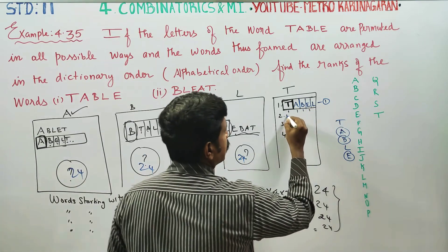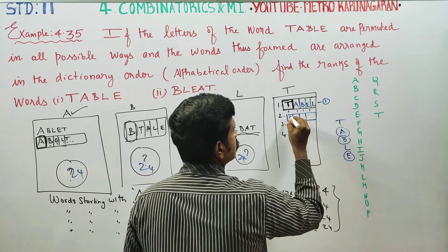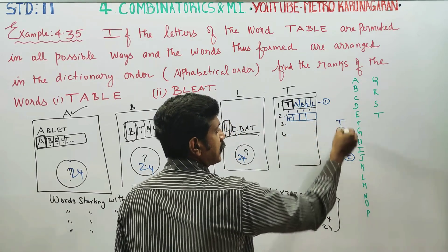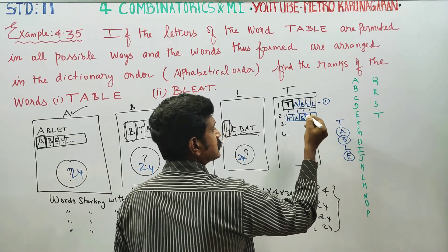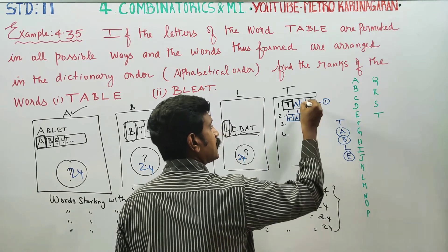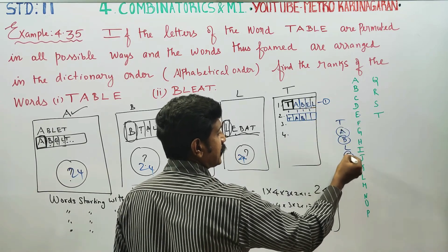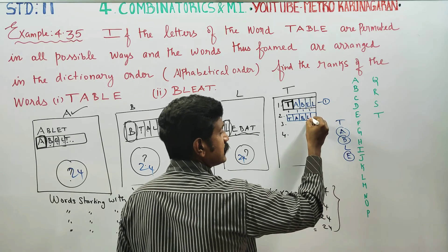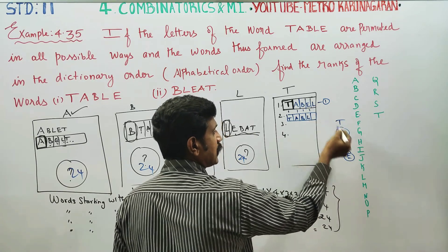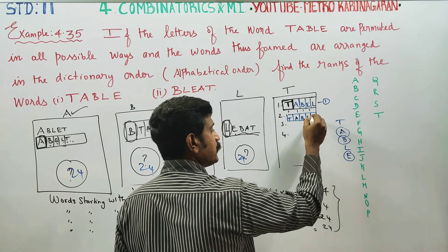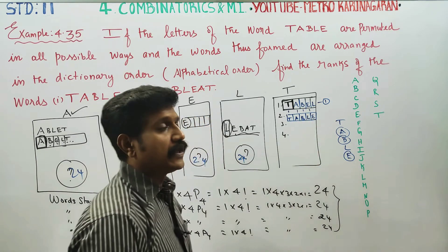T, A, B, E, L is coming — that is word two. Second word: TAB is fixed. E is coming, L is coming. B location is coming. E is coming.